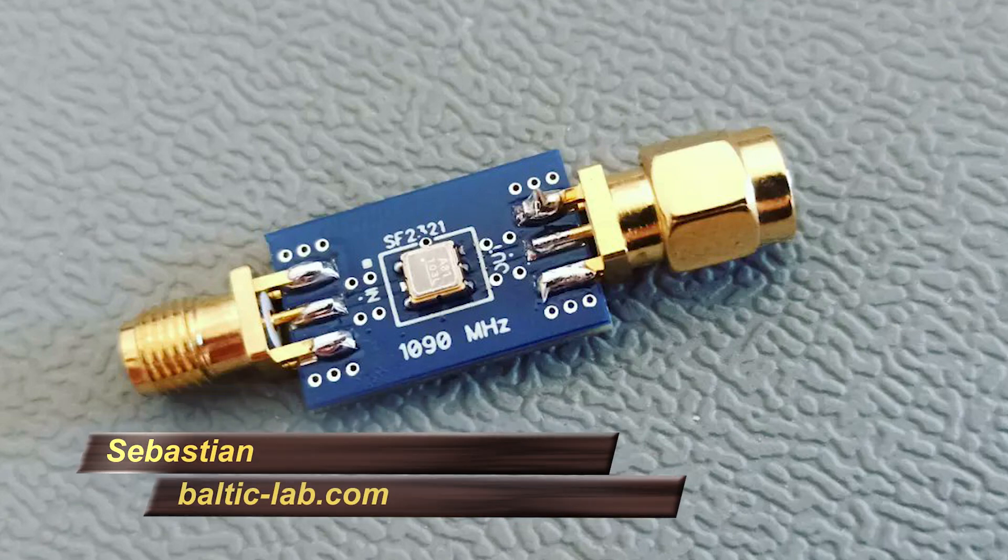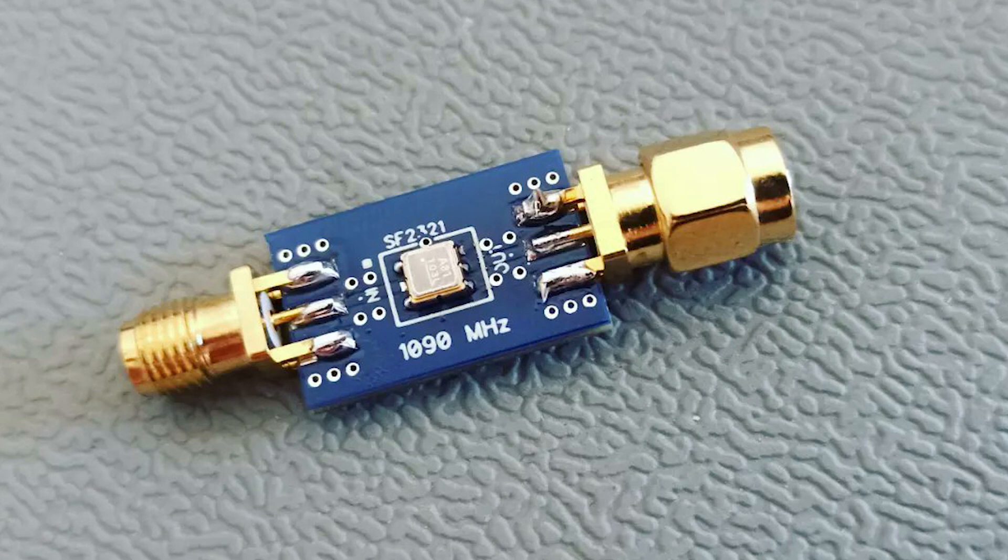What you see here is a little filter board for ADS-B reception on 1090 MHz. It basically consists of a SAW filter and two edge mount SMA connectors.